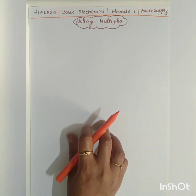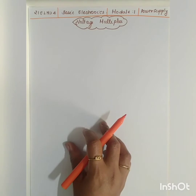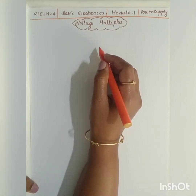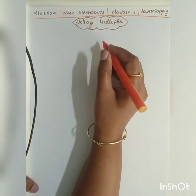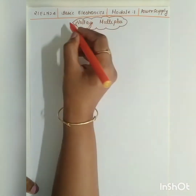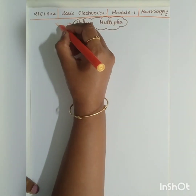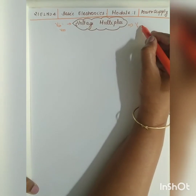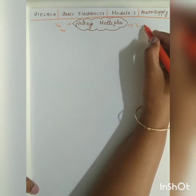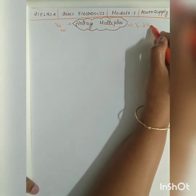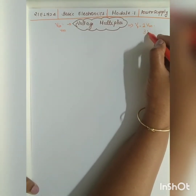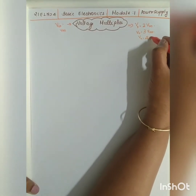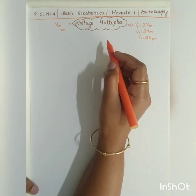The next topic in Module 1 of Basic Electronics is the voltage multiplier. A voltage multiplier is a device which multiplies the output voltage. If the maximum input voltage is Vm, then the output is going to be multiples of Vm. If it is a doubler it will be 2Vm, if it is a tripler it will be 3Vm, if it is a quadrupler it will be 4Vm, and so on.